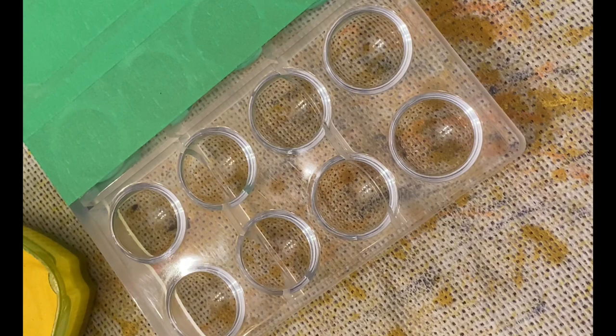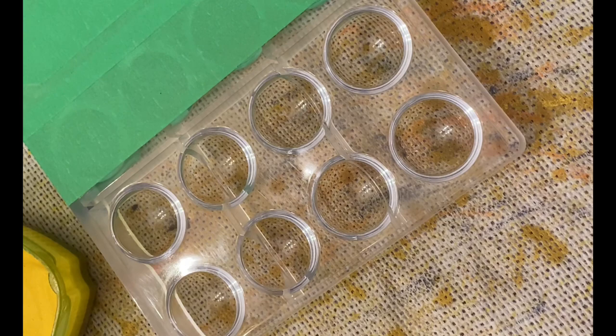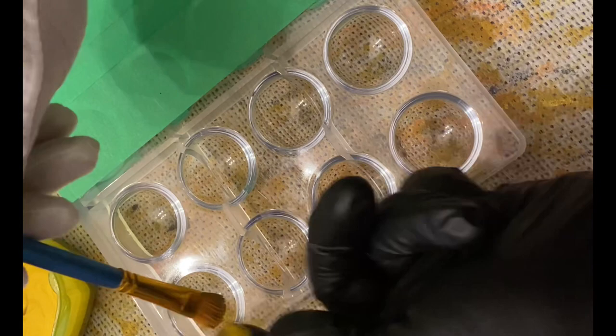I then dip a brush into the colored cocoa butter and use the splatter effect across all the cavities. You'll notice that I get a pretty big droplet in one of them which I didn't like so I just use my finger to thin it out.